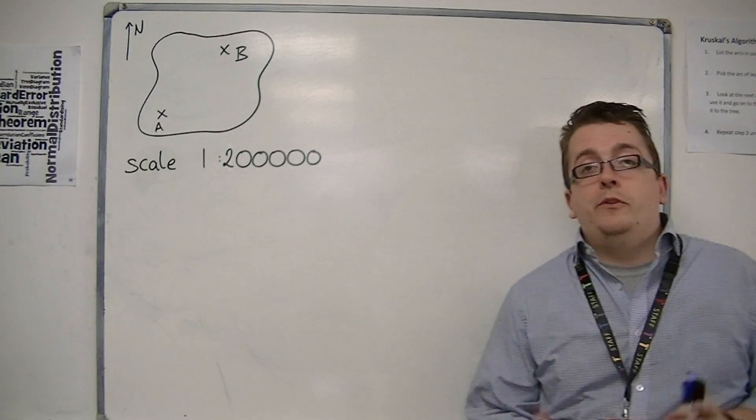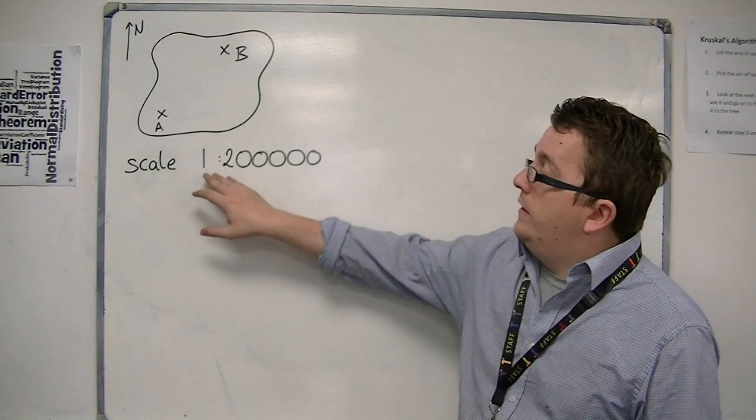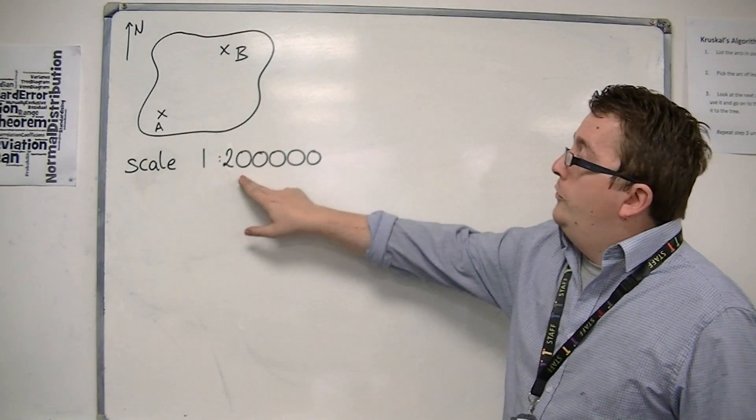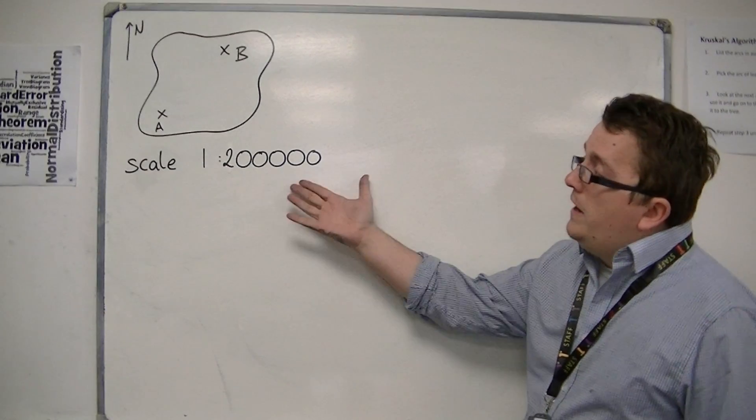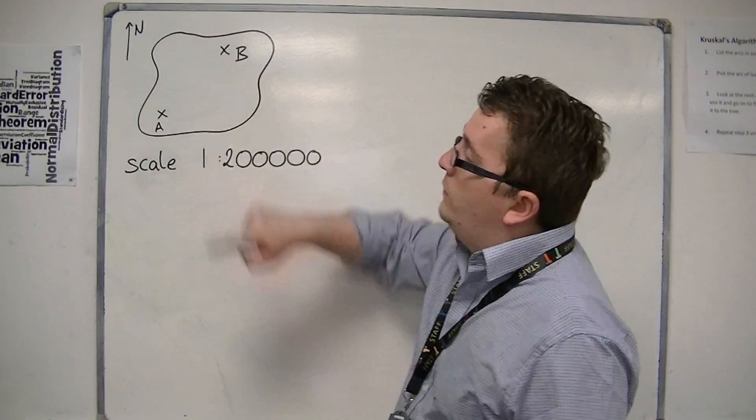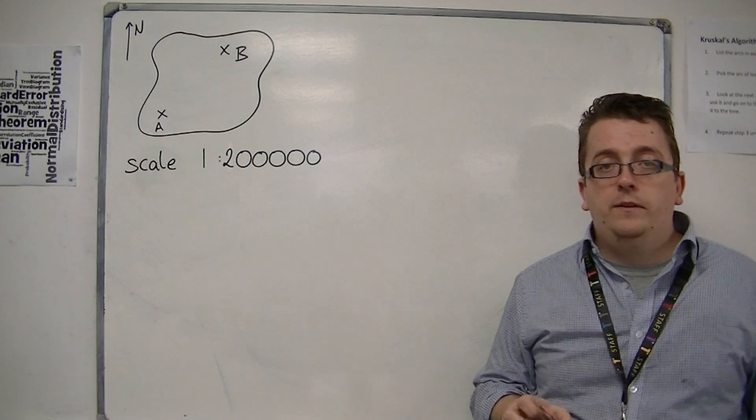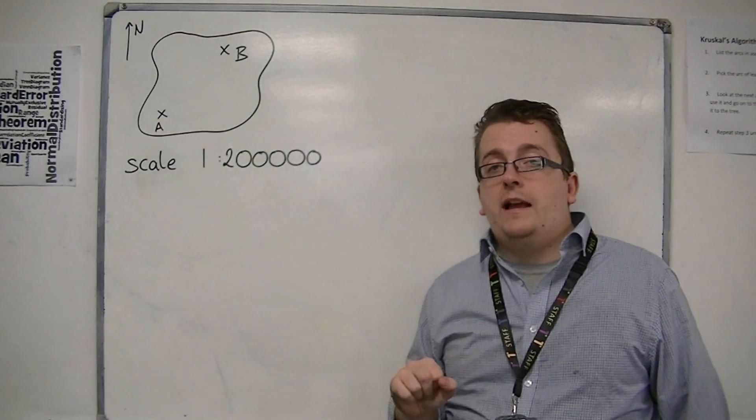So it ends up that some maps will carry a scale that might look like this: one to two hundred thousand, for example. And let's say that's the scale for this map. So I've got an island and I've got two towns on this island at either end, and I want to know how far apart A and B actually are.